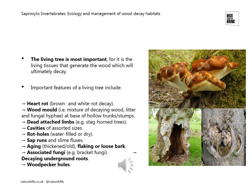There are a number of important features of a living tree that are particularly valuable for saproxylic invertebrates. These include heart rot — the decay of the heartwood — wood mould at the base of hollow trunks and stumps, dead attached limbs, cavities of various sorts, rot holes, sap runs and slime fluxes, aging or flaking loose bark, associated fungi, decaying underground roots, and woodpecker holes. These are all really valuable features of a living tree for saproxylic invertebrates.